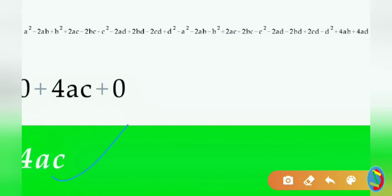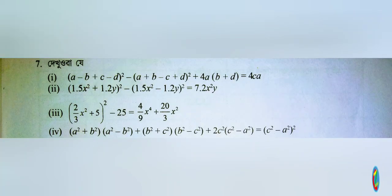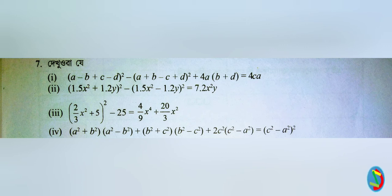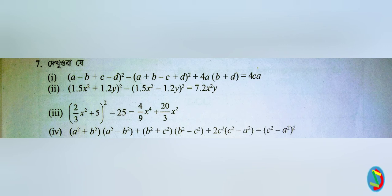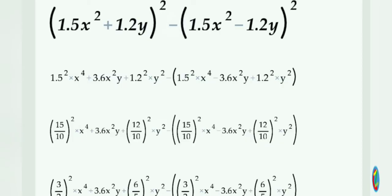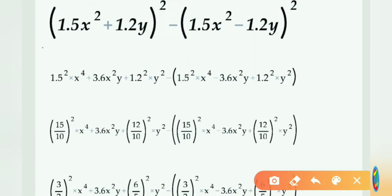So now, this is: 1.5x squared plus 1.2y whole square, minus 1.5x squared minus 1.2y whole square, is equal to 7.2x squared y. Right side or left side: the video is making what one. To solve: a 2D approach — so putting out neighbors: 1.5x squared plus 1.2y whole square, going to get A plus B whole square.